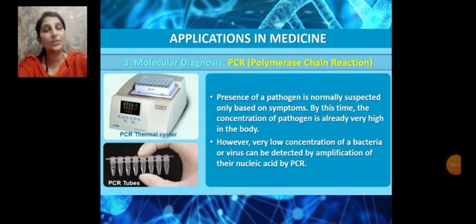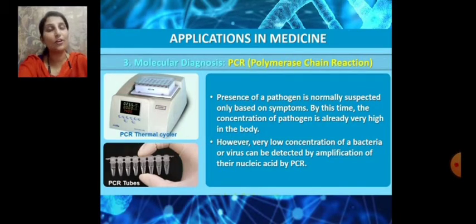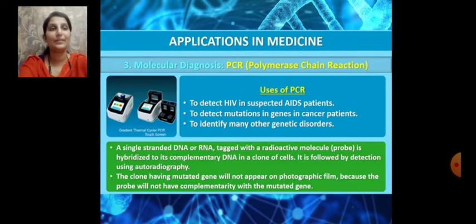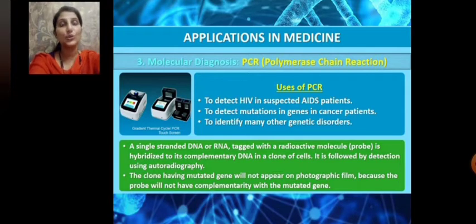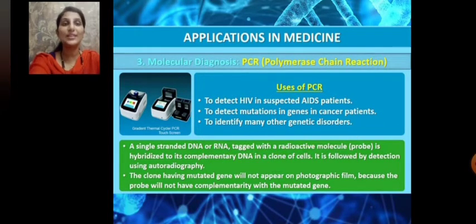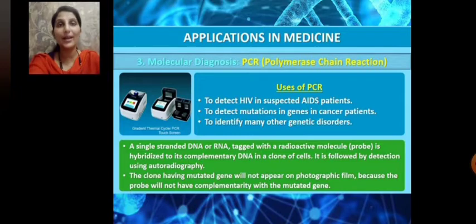However, even a very low concentration of a bacteria or virus can be detected by amplification of the nucleic acid by PCR. PCR helps to detect HIV (Human Immunodeficiency Virus) in suspected AIDS patients, to detect mutations in genes in cancer patients, and to identify many other genetic disorders.